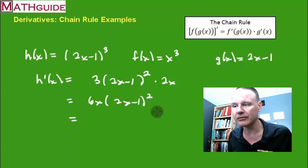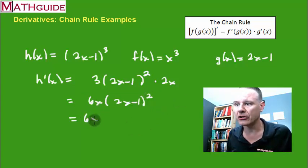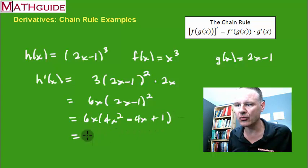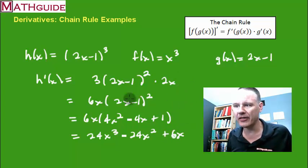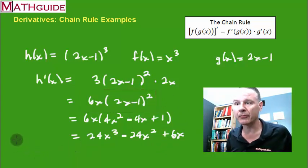If we wanted to, we don't have to, but let's say we actually wanted to expand this whole thing. We would multiply 2x minus 1 times 2x minus 1, which gives 4x squared minus 4x plus 1. Then multiply through again. You get 24x cubed minus 24x squared plus 6x. So which form is better, this one or this one? Many people would just stop at the earlier form. Either one is a perfectly good derivative.